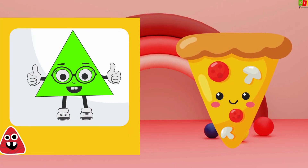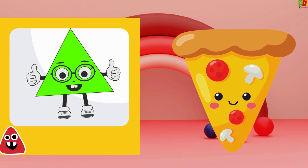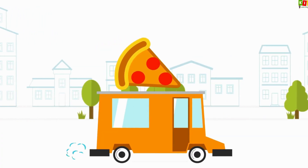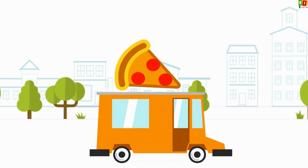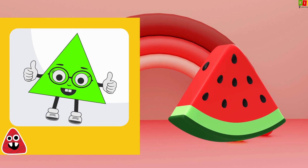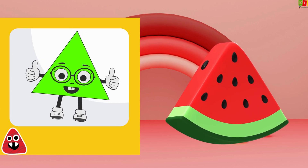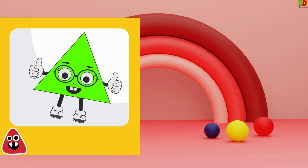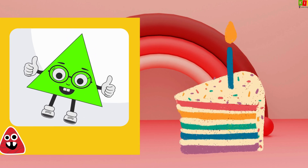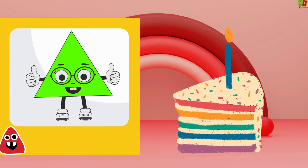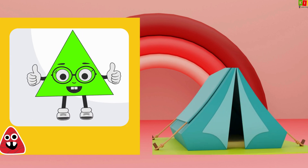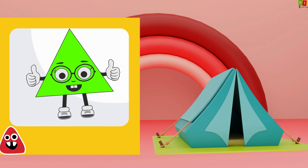Triangle! The pizza slice is triangle in shape! A slice of watermelon is triangle in shape! A slice of cake is triangle in shape! The tent is also a triangle!